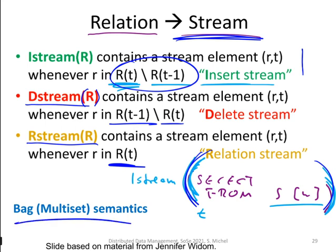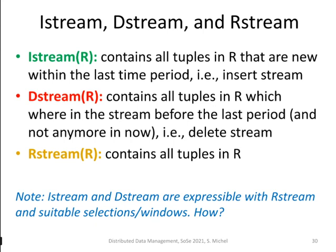To summarize: iStream contains all tuples in R that are new within the last time period; dStream contains tuples which were there before but not anymore (the delete stream); and rStream contains all tuples in R. Notably, iStream and dStream can be expressed with rStream combined with suitable selection predicates and window specifications — this is a good exercise to work through.